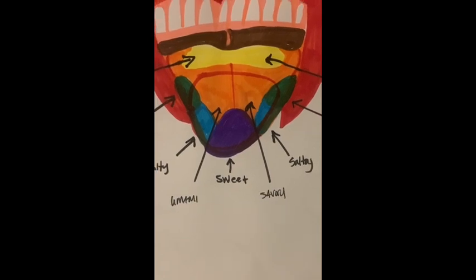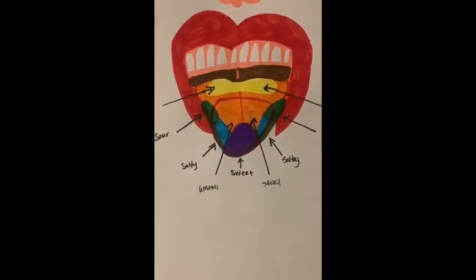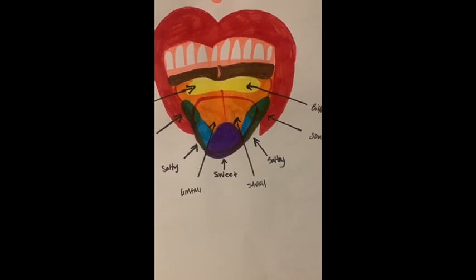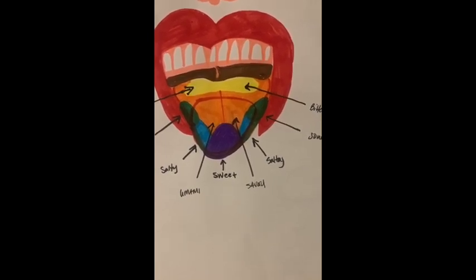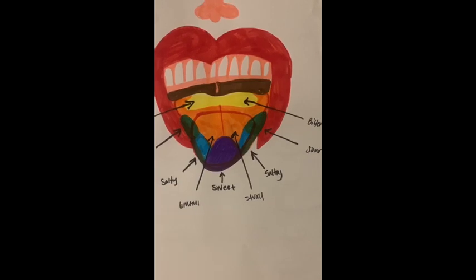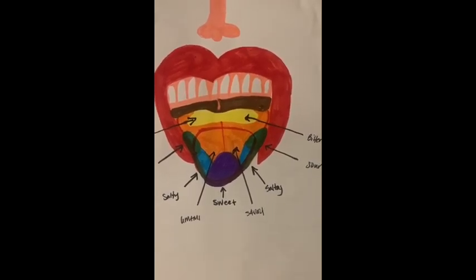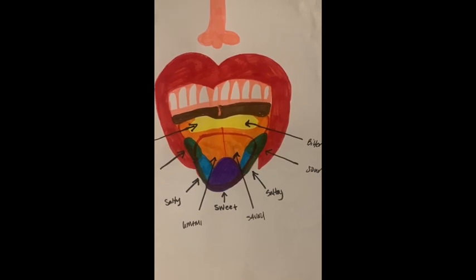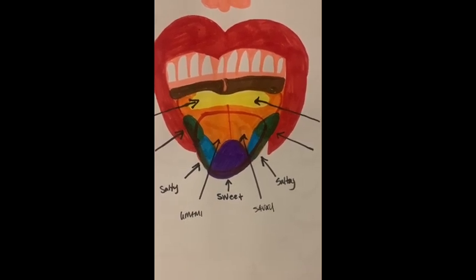Next we have savory, also known as umami, covering the larger surface area of the center of the tongue. This is similar to the taste of a meat broth and is usually caused by glutamic acid and aspartic acid. It can be found in ripe tomatoes, meat, and cheese, all of which contain a lot of glutamic acid. Asparagus is an example that contains aspartic acid. Chinese cuisine uses glutamate — the glutamic acid salt — as a flavor enhancer, which is why a lot of Chinese cuisine has that savory taste, added to make the foods more intense.